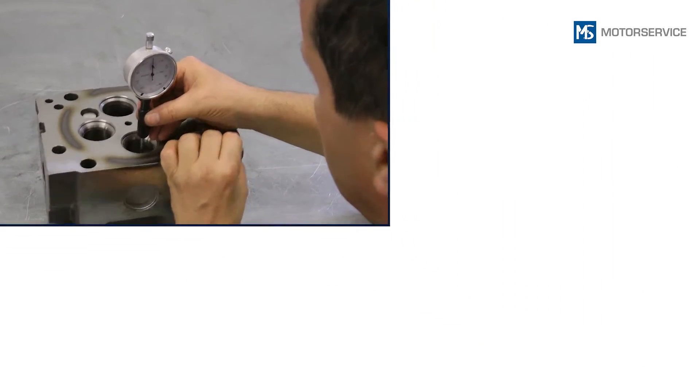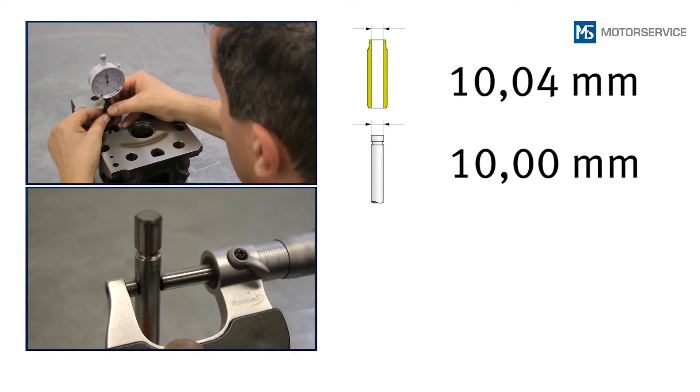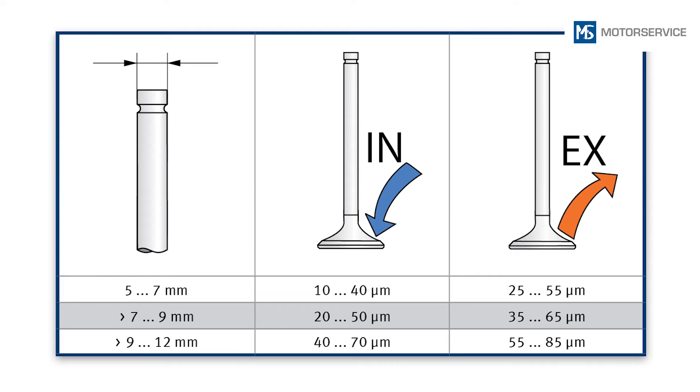To determine the valve guide clearance, the diameters of valve guide and valve stem are determined and deducted from each other. Their determined clearance is compared to the nominal values of the engine manufacturer. If no manufacturer information is available, the guide values from the table can be used.